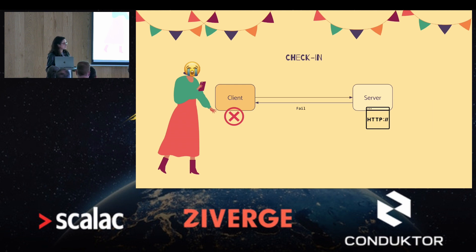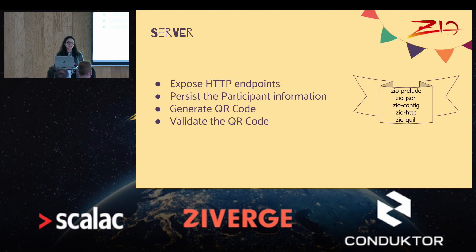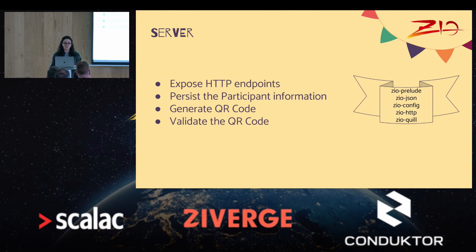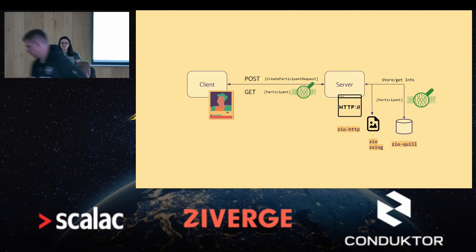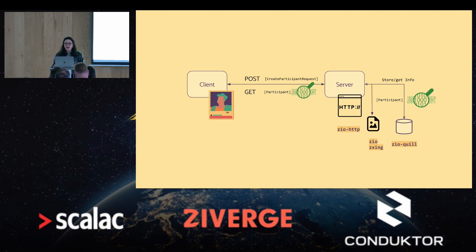Our focus in this application is on the server implementation that will expose HTTP endpoints, persist the information of the participant, generate the QR code, and validate it. We are going to use different ZIO libraries: for the HTTP server we use ZIO HTTP, for the database we use Postgres and ZIO Quill — which enables us to write database queries in Scala — and to generate and check the QR code, we use a library called ZXing. While it starts with Z, it works with ZIO.